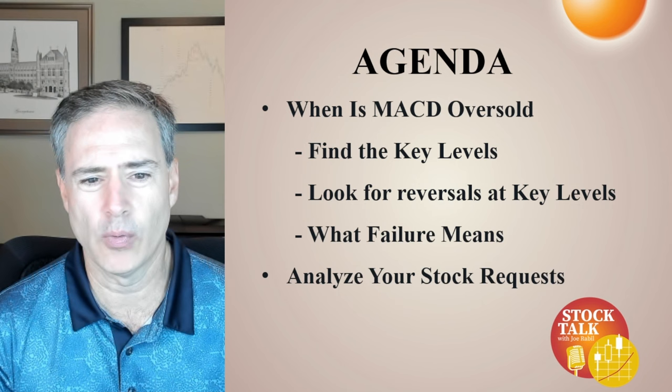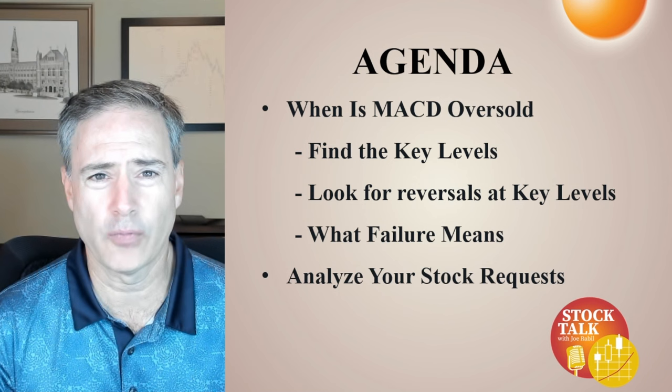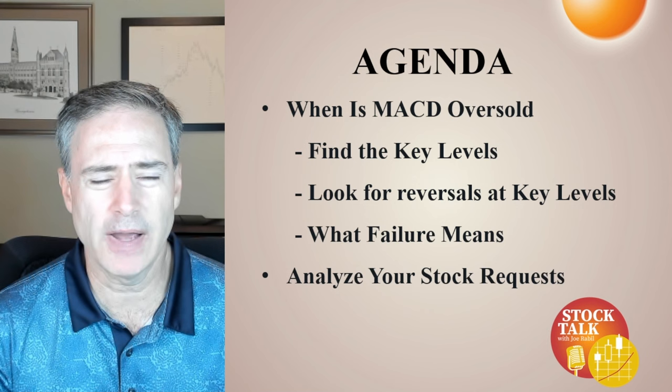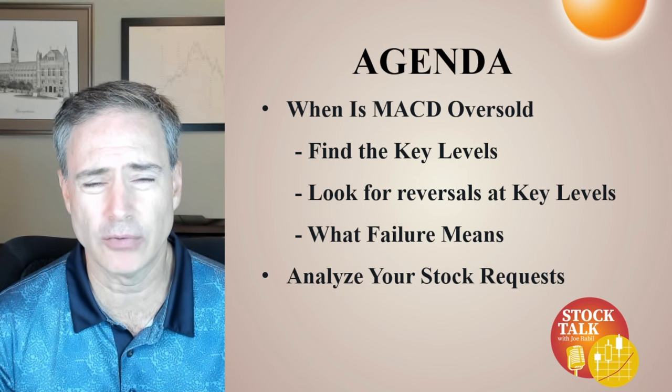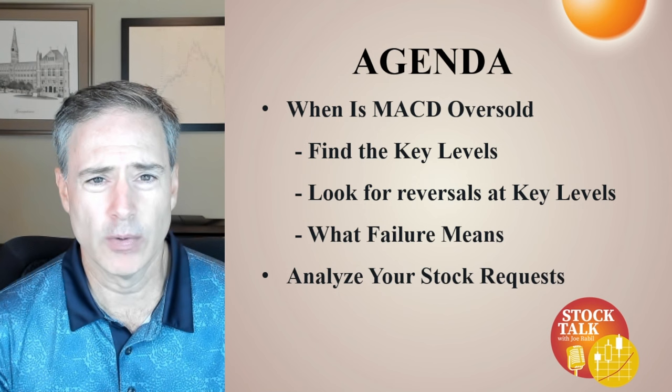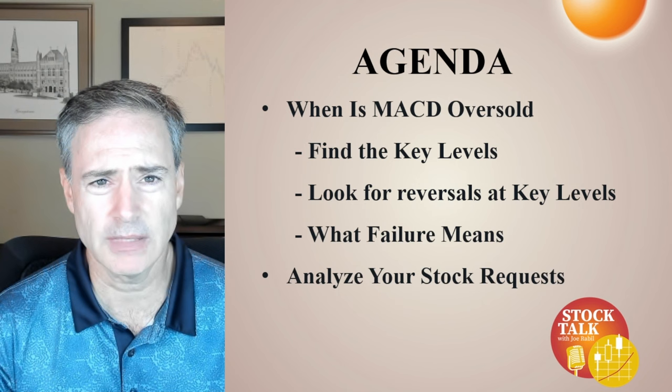The first thing we want to do is find out what the key levels are for each instrument. I'm going to use the S&P. Once we find that, we're going to be looking for reversals. If that doesn't happen or if that fails, we have to learn from that and figure out what that means. I'm going to show you how Gerald Appel handled that and subsequently how I basically use it the same way. Once we get through that, we're going to go through the stock requests that came through.